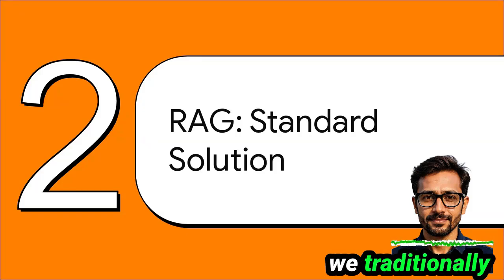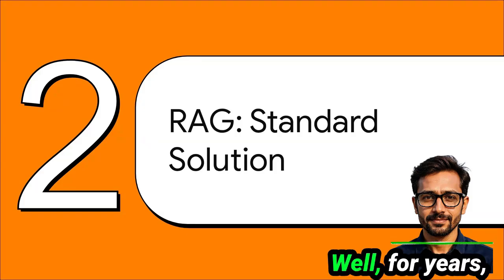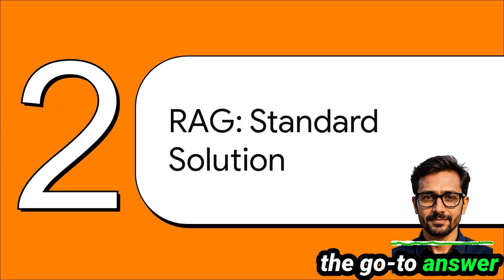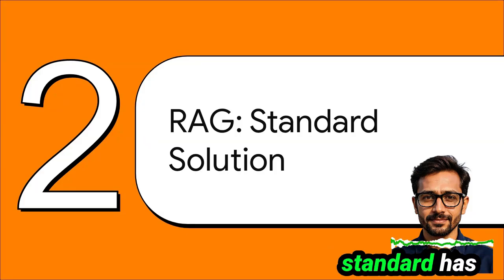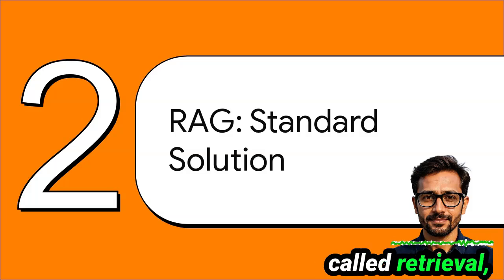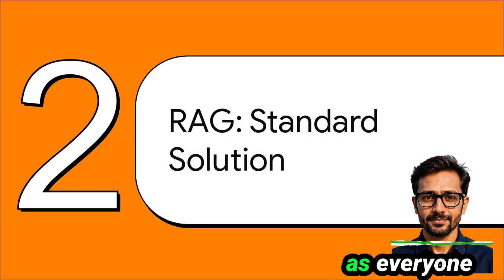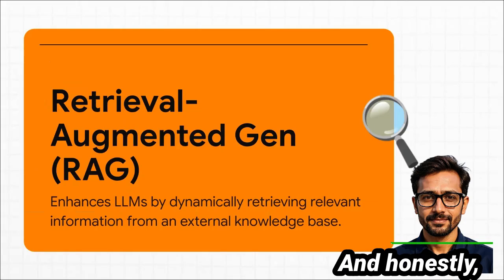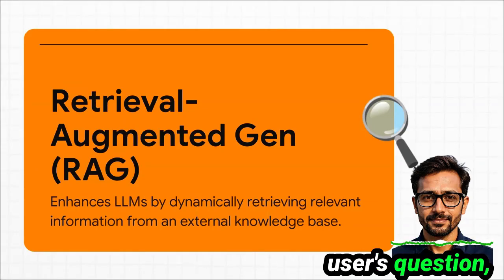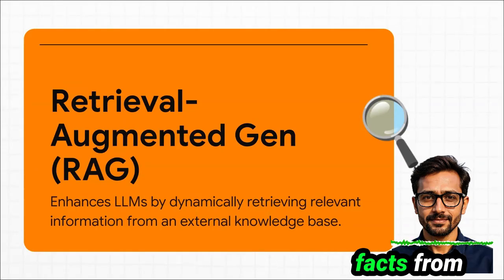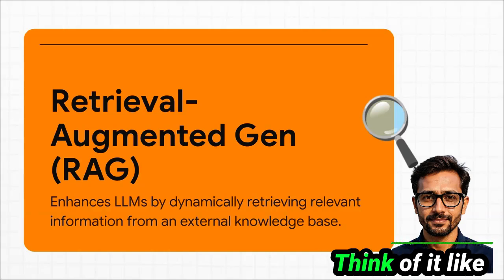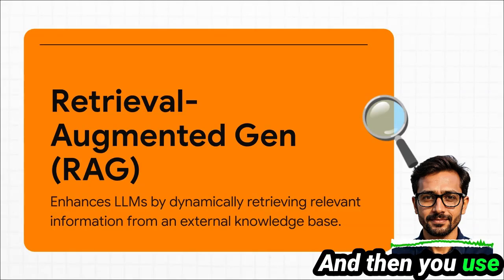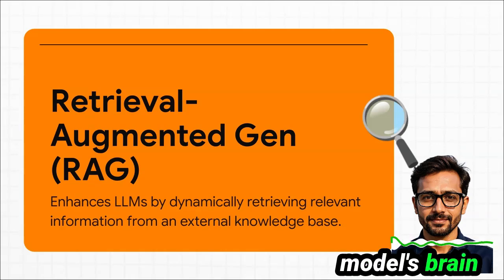So how have we traditionally tackled this problem? For years, the go-to answer, the industry standard, has been a technique called Retrieval Augmented Generation — or as everyone calls it, RAG. The name pretty much says it all: you take a user's question, you retrieve the relevant facts from some external knowledge base (think of it like a digital library of documents), and then you use that information to augment the model's brain before it generates the answer.